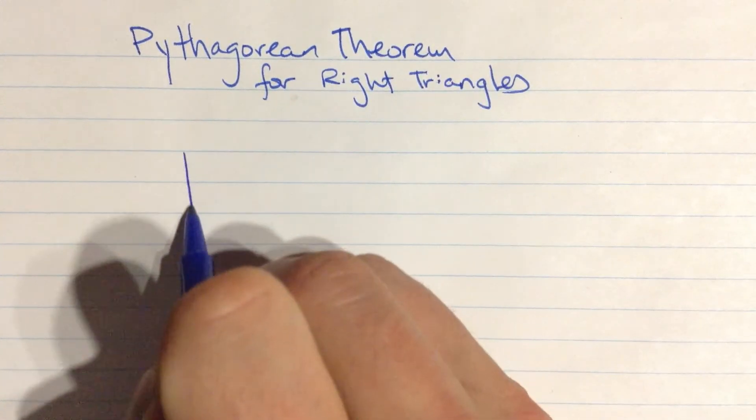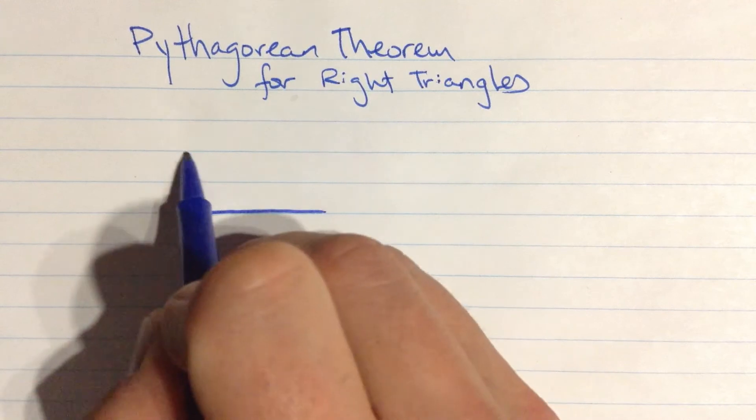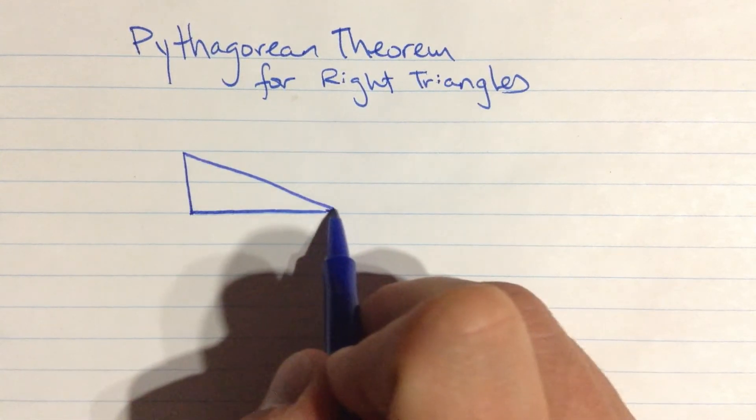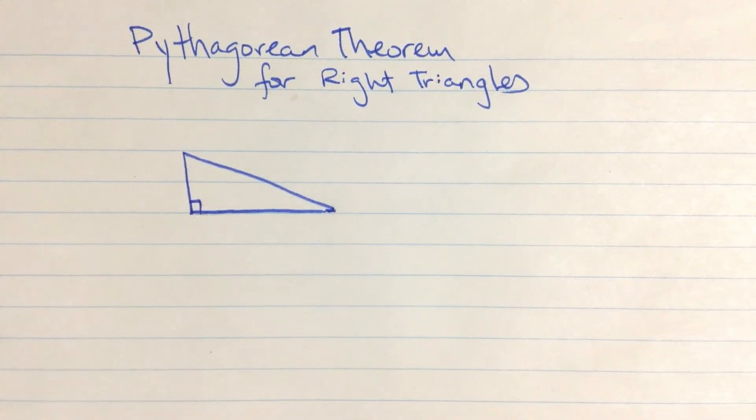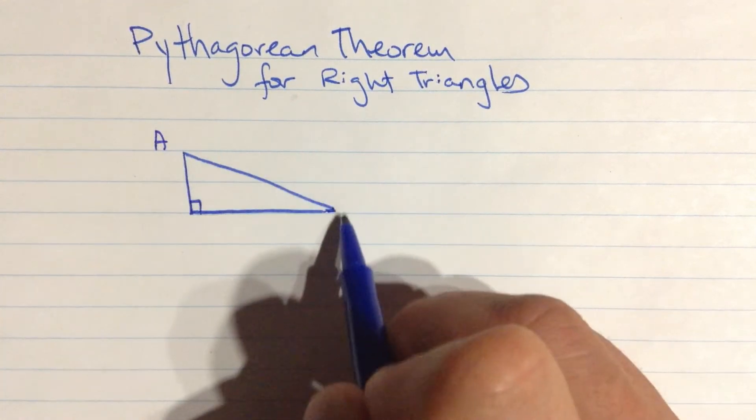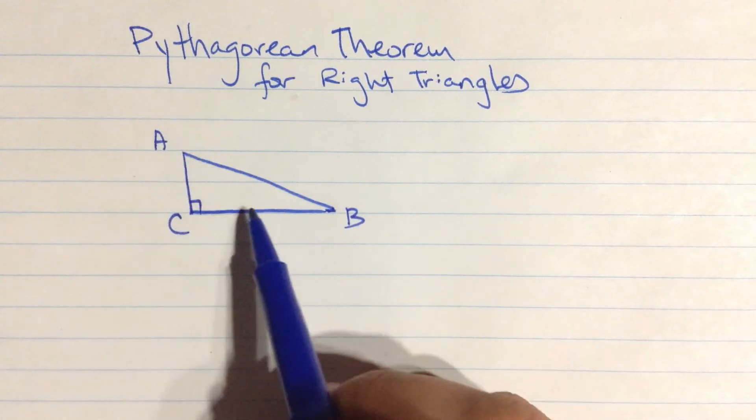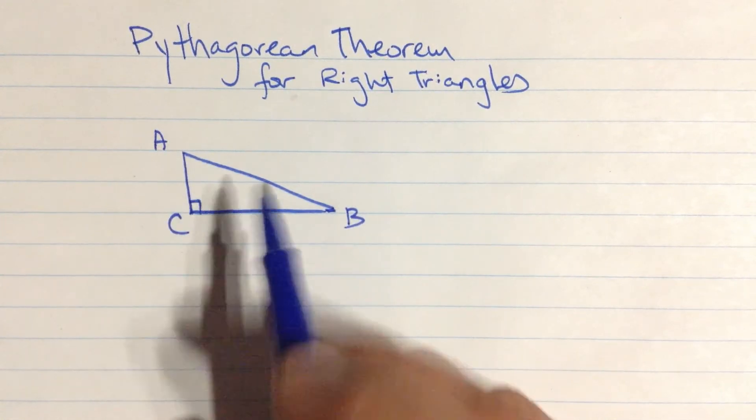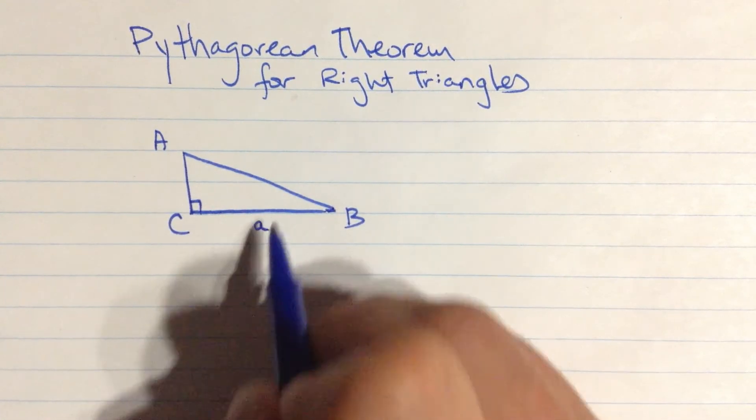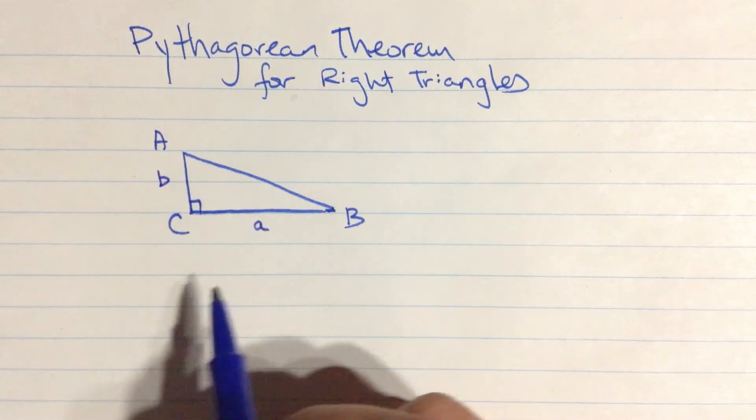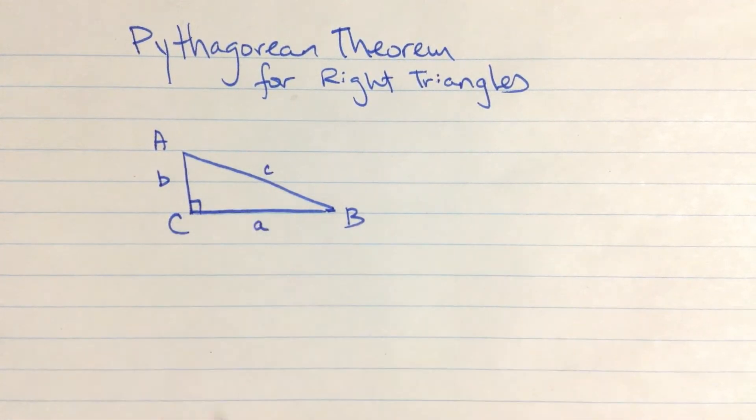Right triangles are the ones that have a right angle in them somewhere, which we will label with a little tiny square like this. And I'm just going to label this triangle ABC with capital letters. And the opposite sides from each of these big angles I'm going to label with the lowercase versions: little a, little b, and little c.